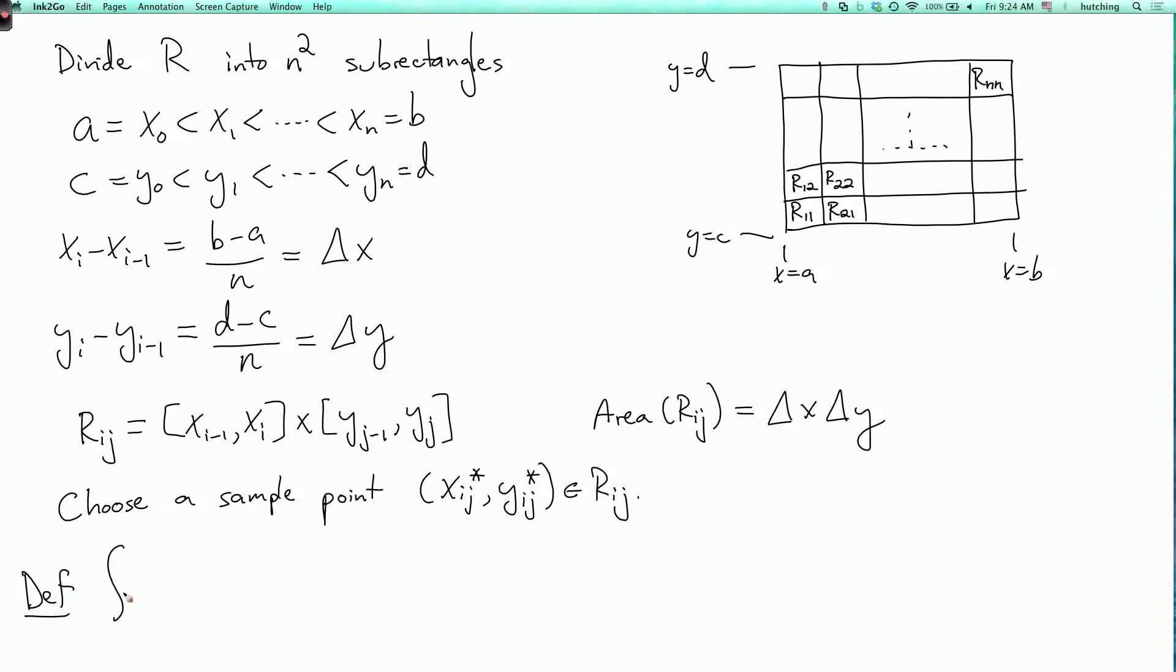So the double integral over R of f dA is the limit as n goes to infinity of the sum as i and j go from 1 to n, so there are n-squared terms here, of f of the point (x_ij star, y_ij star) times delta x delta y.